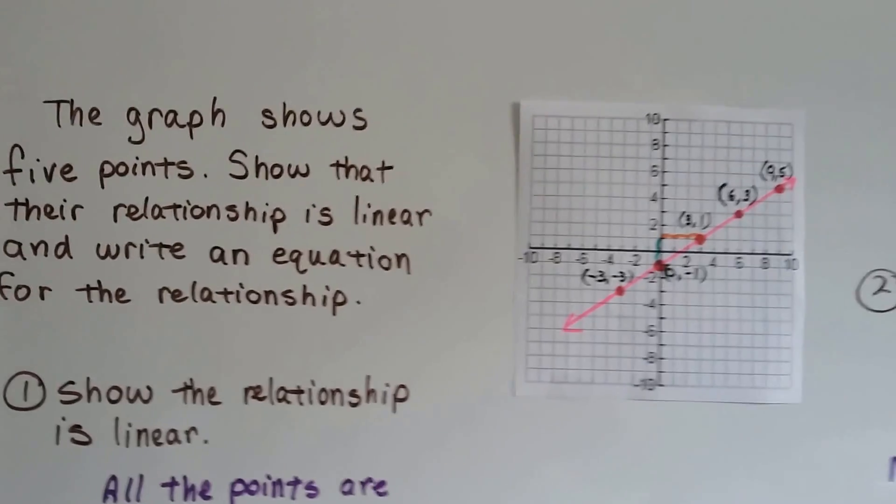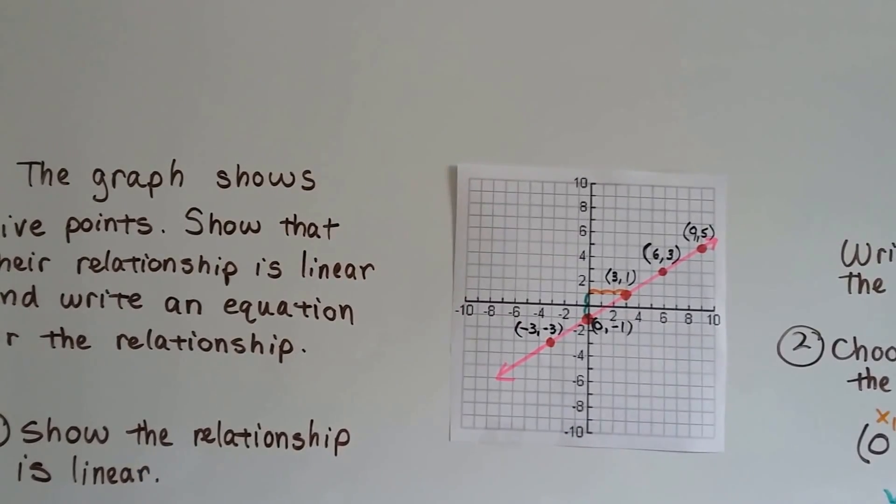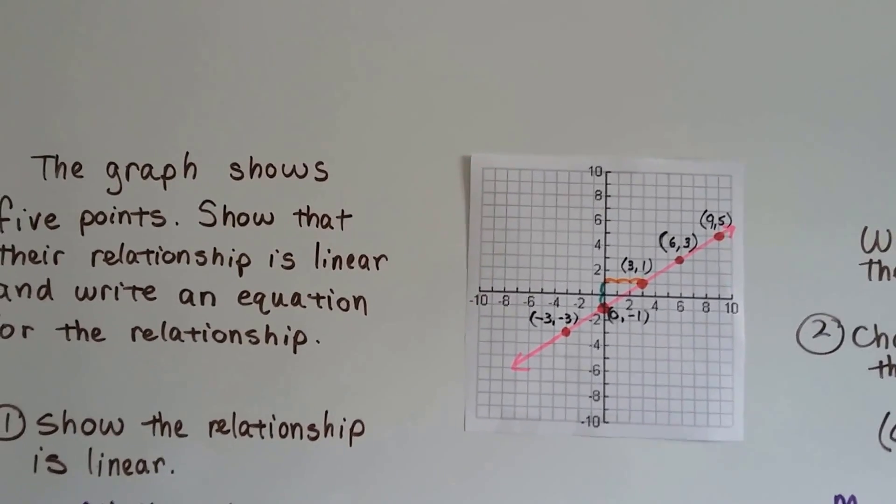So this graph shows five points. We need to show that the relationship is linear and write an equation for that relationship.